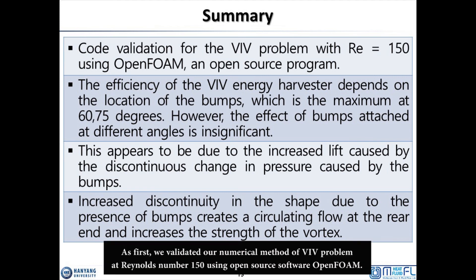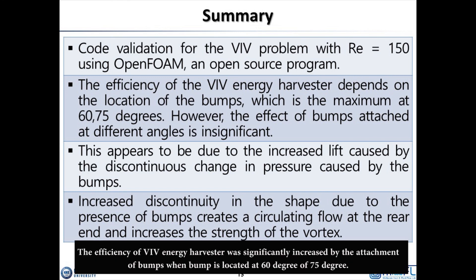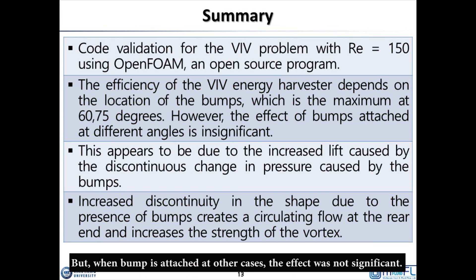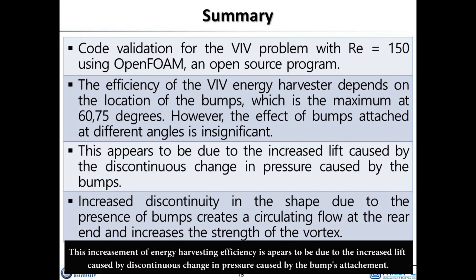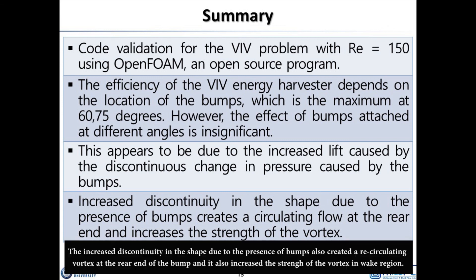In summary: first, we validated our numerical method for the VIV problem at Reynolds number 150 using the open-source software OpenFOAM. The energy harvesting efficiency of the VIV harvester was significantly increased by attaching bumps when the bump is located at 60 or 75 degrees; for other locations, the effect was not significant. This increase in efficiency is attributed to the increased lift caused by the discontinuous pressure change at the bump location. The shape discontinuity due to the bump also created a recirculating vortex at the rear end of the bump, which increased the vortex strength in the wake region. Thank you for listening.